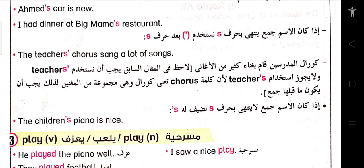الحالة الرابعة: إذا كان المالك مفرد وينتهي بحرف S، فإننا نضع apostrophe فقط. مثال: Remas's dress. نحط له apostrophe بعد الـ S، ثم نضع كلمة dress.